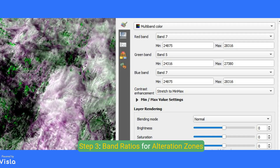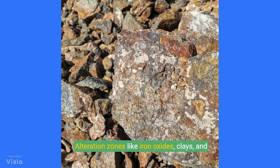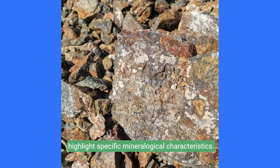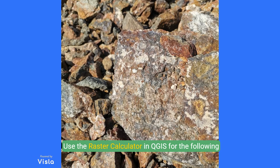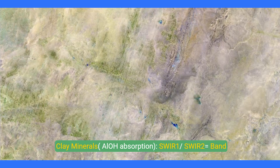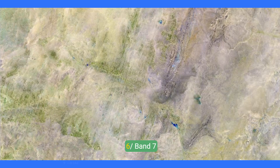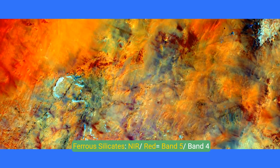Step 3: Band ratios for alteration zones. Alteration zones like iron oxides, clays, and silicates can be identified through band ratios that highlight specific mineralogical characteristics. Use the raster calculator in QGIS for the following band ratios: Clay minerals (OH absorption) = SWIR 1 / SWIR 2 (Band 6 / Band 7); Iron oxides = Red / Blue (Band 4 / Band 2); Ferrous silicates = NIR / Red (Band 5 / Band 4).